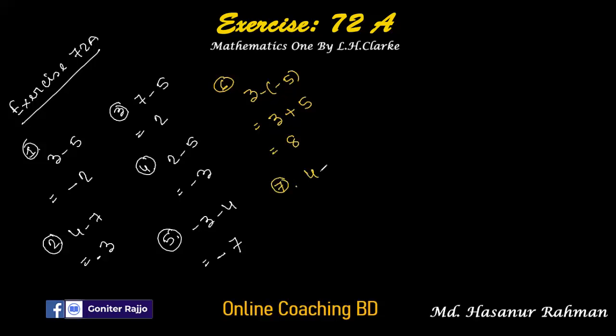Number seven: 4 minus minus 7. So 4 minus into minus is plus 7. 4 plus 7 is 11.